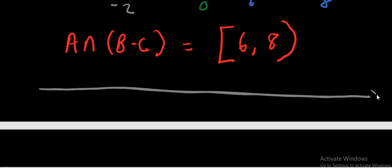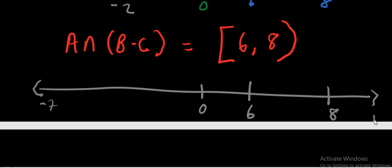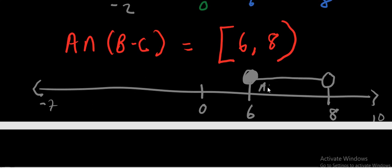We can show this on a number line. Draw the number line, put zero, then mark 6 and 8. Remember the universal set is negative 7 to 10. Place a shaded circle on 6 because it has a block bracket, and an unshaded circle on 8 because it has an open bracket, then connect them. This is A intersection (B minus C). It is not hard — you can work out these questions by following the steps.